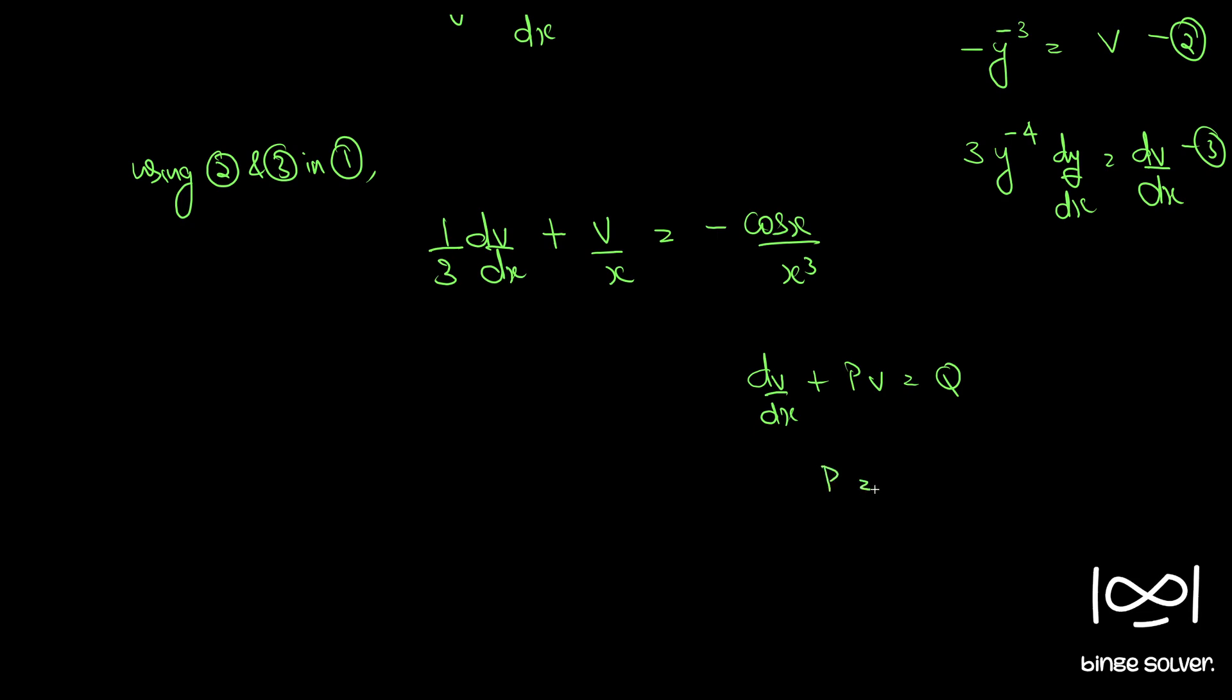If you multiply throughout by 3, we get dv by dx plus 3 by x times v equal to minus 3 cos x by x cubed. So both are functions of x alone.